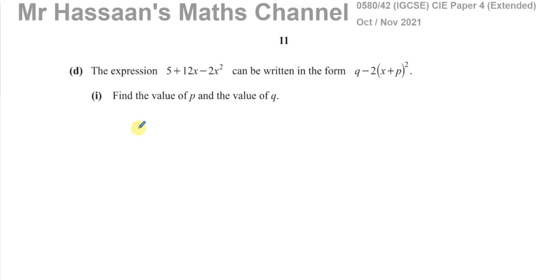Okay, so first of all what I'm going to do is I'm going to rewrite this to make x² in the front. So I've got -2x² + 12x + 5.